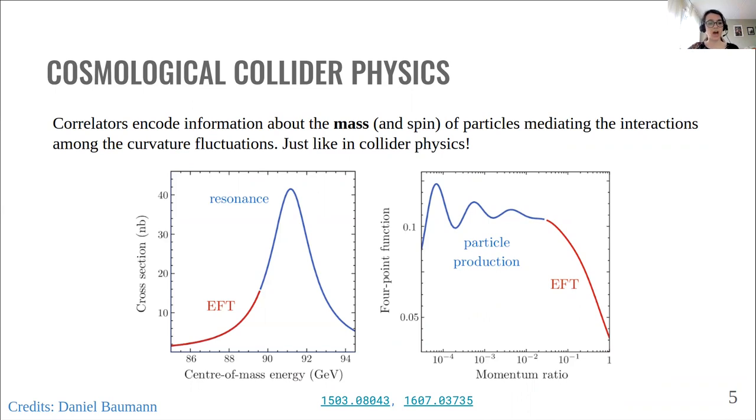And this is an analog of a particle collider. As you can see on the plot on the left, the peak in energy, a resonance, signals in a collider the presence of a new particle. In the same way, in the plot on the right, you can see that the four-point function shows an oscillation, which is an oscillation with the frequency given by the mass of new particles in the inflationary background.